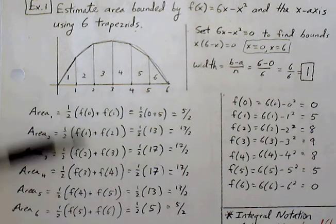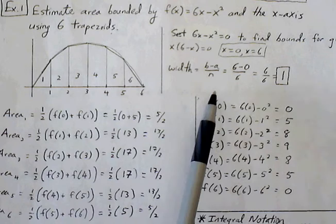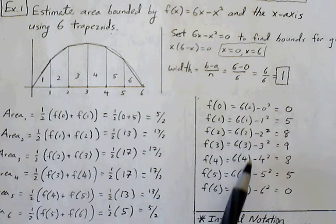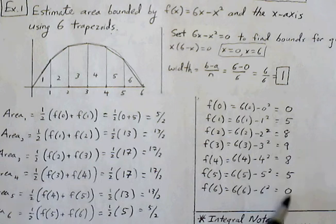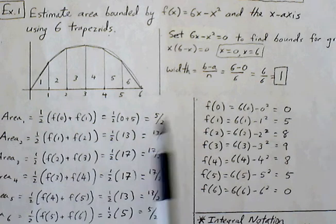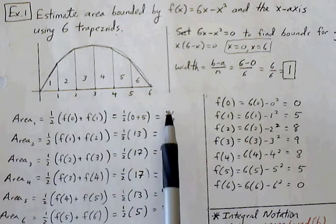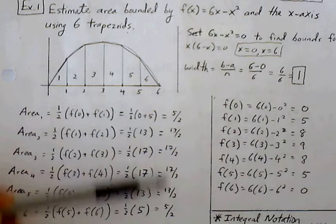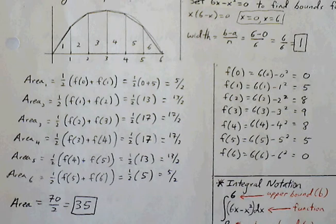Now we can find all these values by plugging into our function. So f of 0, f of 1, all the way to f of 6. I worked out all the values here, and we have the heights at each of those intervals. So if we plug all those values in, we're going to get the area of each trapezoid, or in the instance of the endpoints that are going to be triangles. So we add all these up, and our area, our approximation, will be 70 over 2, or 35.